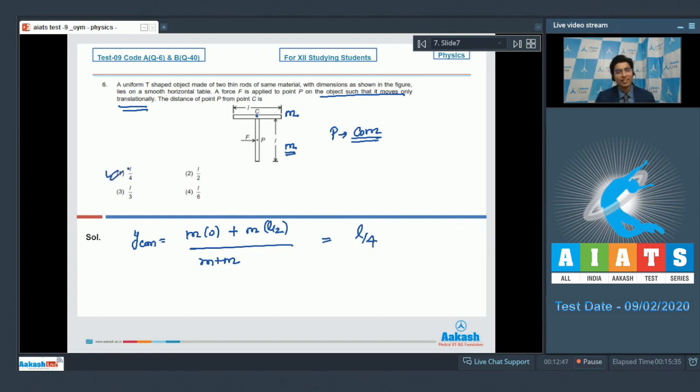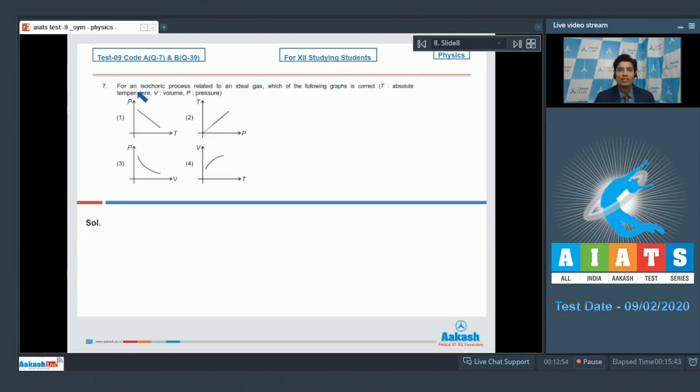This will be equal to L by 4, which makes option number 1 as the correct answer. Now let us solve question number 7. The question says, for an isochoric process related to an ideal gas, which of the following graph is correct. T is the absolute temperature, V is volume and P is pressure.